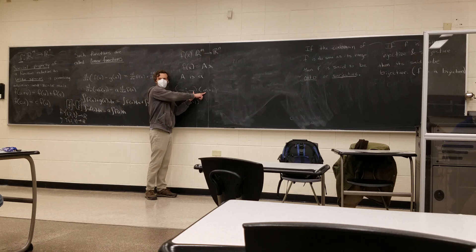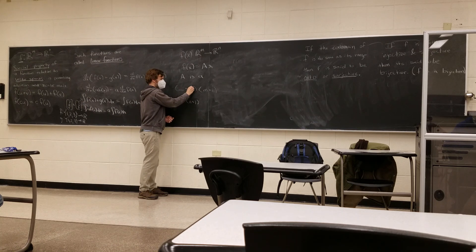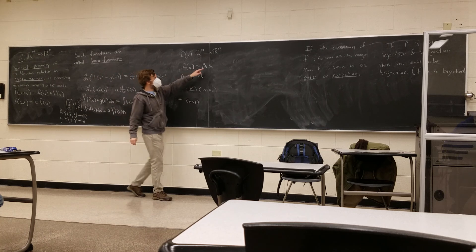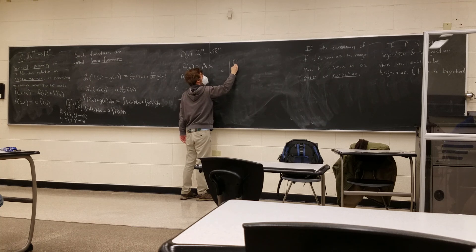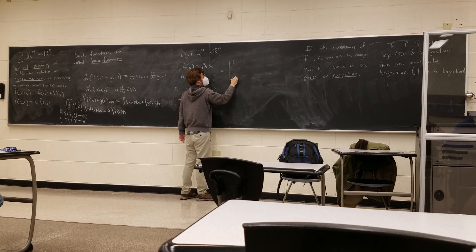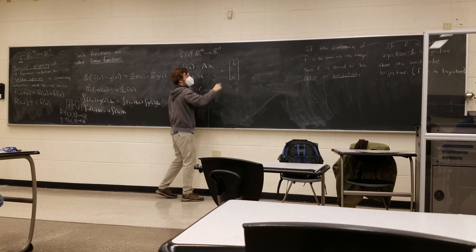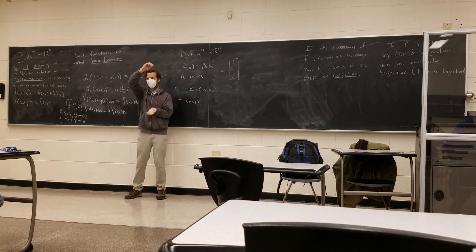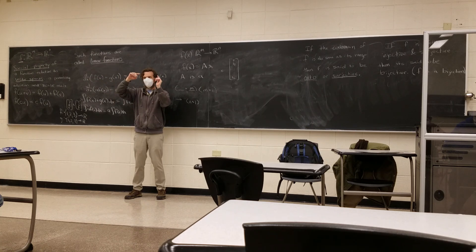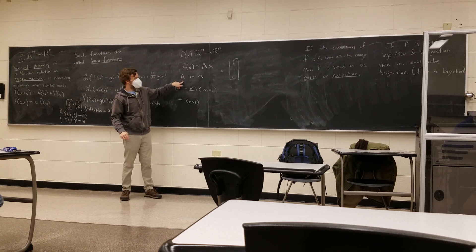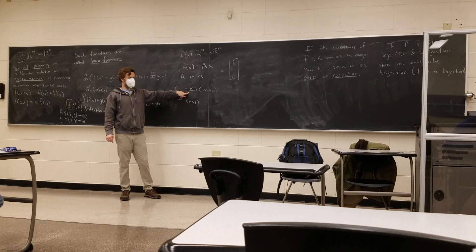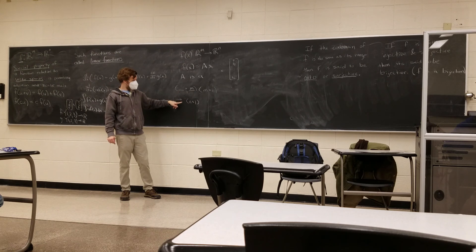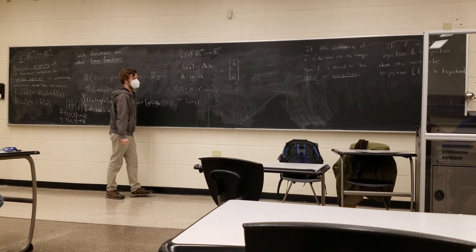For the matrix, these two things have to match, otherwise the multiplication isn't defined. If x is equal to x1, x2, down to xm, and we multiply this by a matrix, we take it and flip it on its side and multiply it by the columns. So A has to have m columns for this to be defined. And how many entries is the output going to have? It's going to have as many as there are rows. It has to have n of them, so this has to be an n by m matrix.